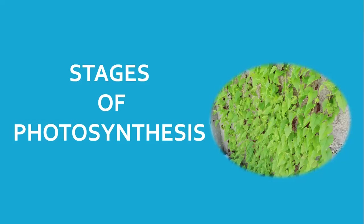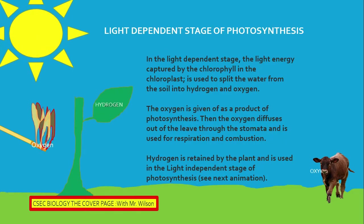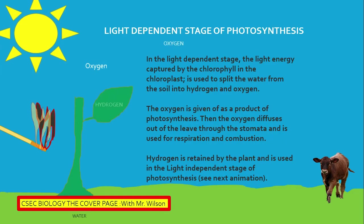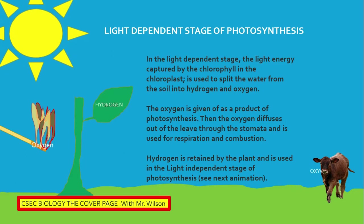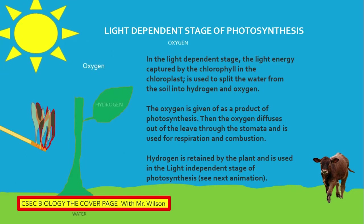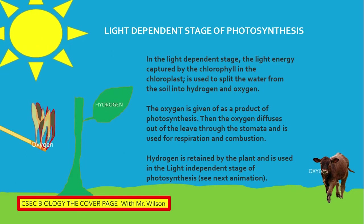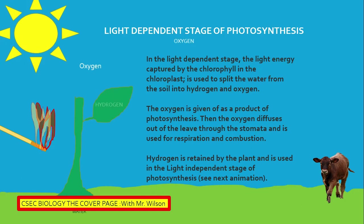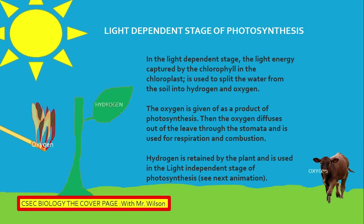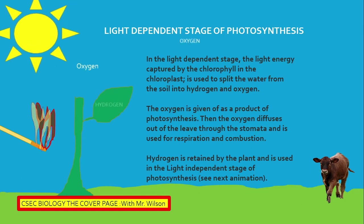Where does the plant get its food? To answer this, we must look at the stages of photosynthesis. Photosynthesis has two stages: the light-dependent stage and the light-independent stage. Let's look at the light-dependent stage of photosynthesis.